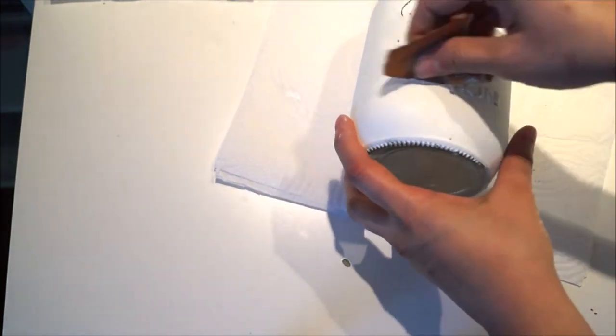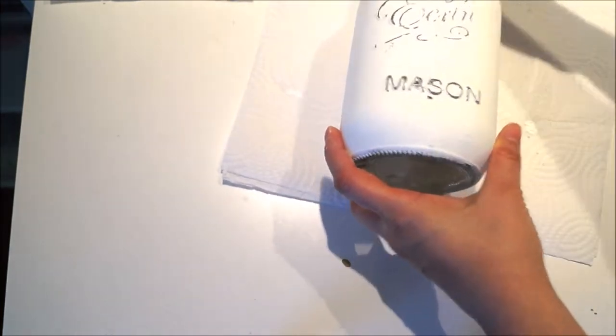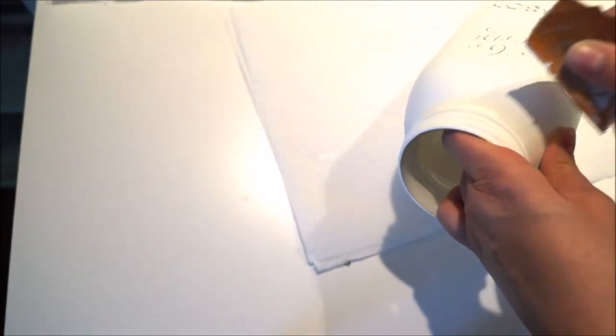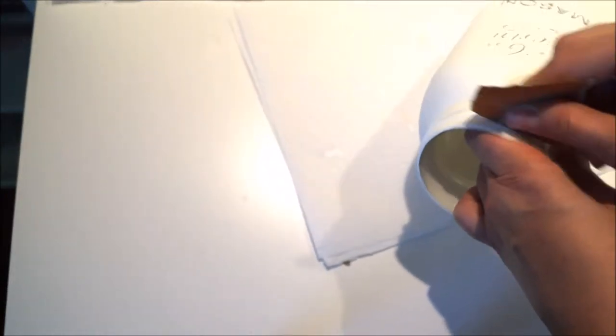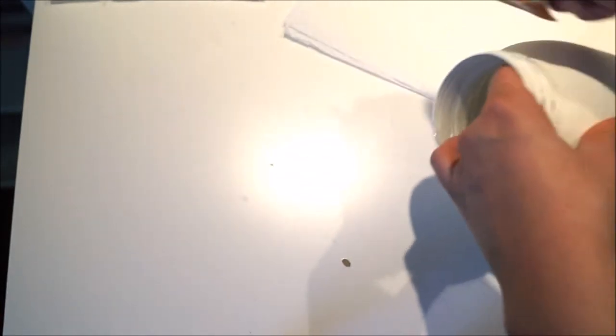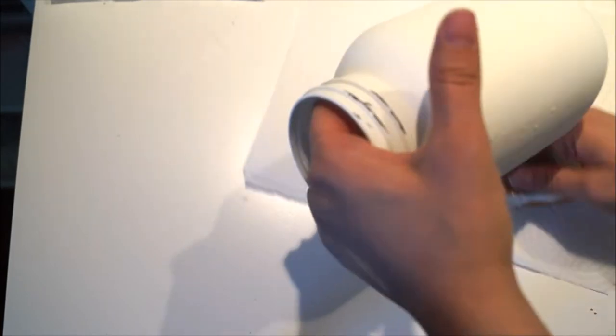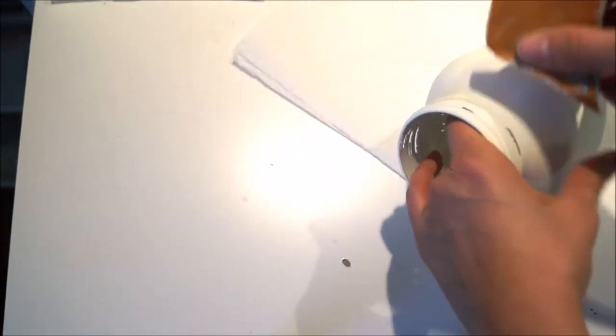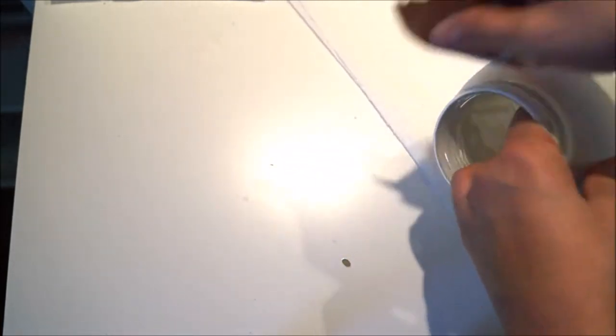I also like to distress the paint at the top of the jar and the bottom also. And just go all the way around. This gives a nice antique look to it. At this point you can leave the paint the way it is or you can even protect it with a little bit of varnish. But I like the matte look and I don't want it to be glossy so I'm just going to leave it the way it is.